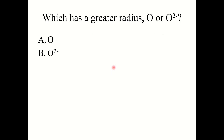Quick knowledge check: which has a greater radius — oxygen or the oxygen 2- anion? The correct answer is B: O²⁻.